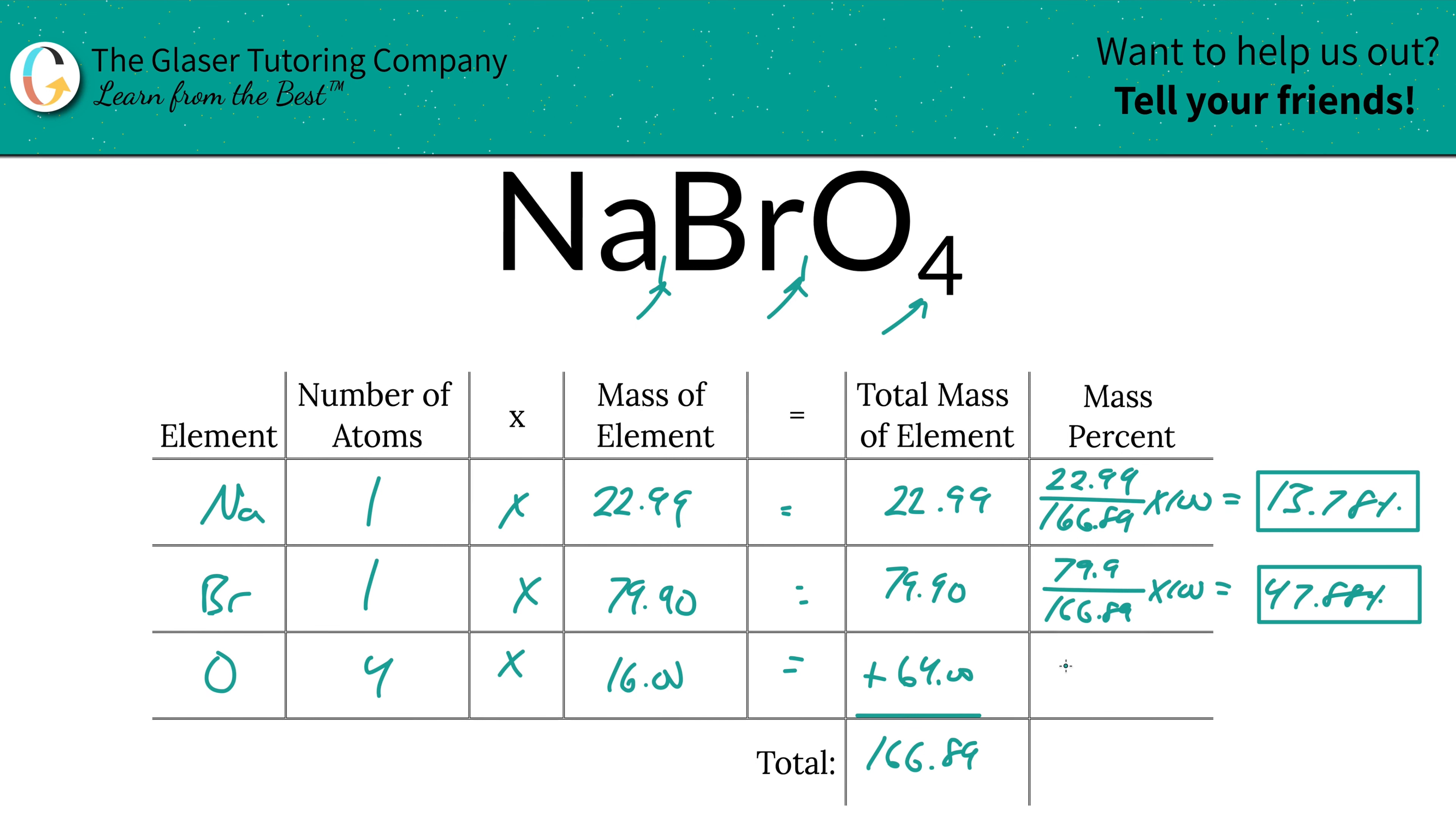Bada bing, bada boom. And last but not least, take the total mass of the oxygen, 64. 64 divided by the total mass of the compound, multiply that by 100. I don't know what happens at the decimal there, but 38.35 percent.